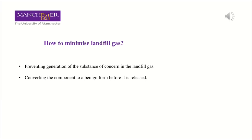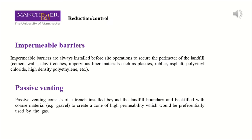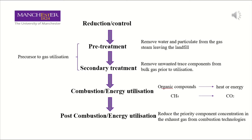The key point of minimizing hazardous landfill gas is preventing generation of the substance of concern, or converting the component to a benign form before it is released. The first step is the reduction and control of landfill gas. Improving barriers and passivation are common methods for reducing landfill gas. The second step is pre-treatment, which could remove water and particulates from the gas. Then secondary treatment will remove unwanted trace components. Combustion is the most common technique for treating and using landfill gas, which is an efficient method for destroying organic compounds and generating heat or energy.